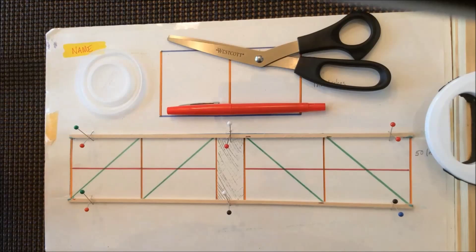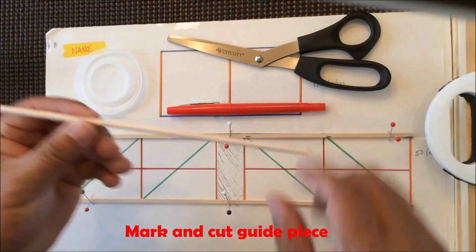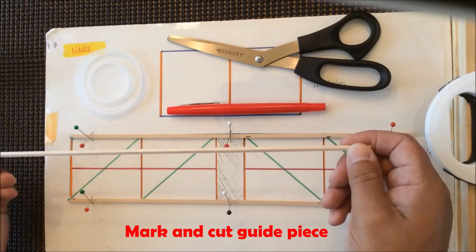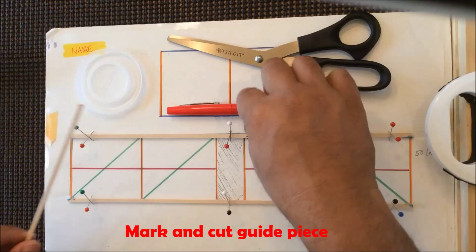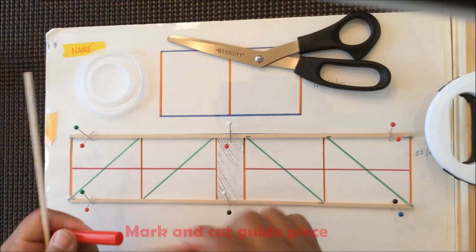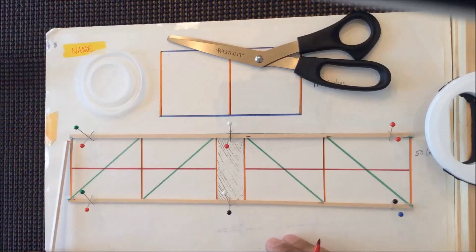To make a guide piece, here's what we're going to do. We're going to start by taking just a piece of your balsa wood. I want you to go to one end of your design, doesn't matter which end you want to start with.